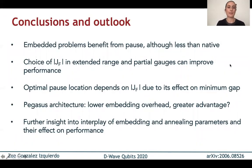Okay. So to wrap things up, we have seen that embedded problems like native ones benefit from a pause, although not as much because of the more costly nature of changing configurations. And then we've also seen that the choice of J-ferro for the vertex models in the extended range, as well as using partial gauges can improve our performance. We saw that the optimal pause location depends on J-ferro because the larger J-ferro will increase the energy and move the minimum gap, which determines where the optimal pause location is.